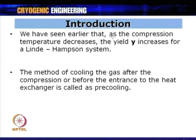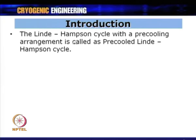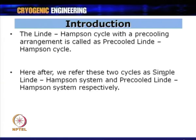One approach would be reducing compression temperature, but the compressor cannot work at lower temperatures. So compression occurs at room temperature (~300 K), and the gas must be pre-cooled after compression, entering the first heat exchanger at a lower temperature. The Linde-Hampson cycle with a pre-cooling arrangement is called the pre-cooled Linde-Hampson cycle, as distinguished from the simple Linde-Hampson cycle.